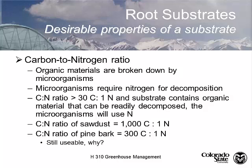If you're using high CN ratio material, you have to add more nitrogen. The best carbon-nitrogen ratio we want is 30 to 1. If it's greater than 30:1, there's organic material that can be readily decomposed, and your microorganisms are going to require nitrogen and rob it from the plant. The CN ratio of sawdust from a sawmill is regularly 1,000 to 1. We use a lot of pine bark in potting soil — pine bark has a CN ratio of 300 to 1, which is 10 times greater than 30:1, yet pine bark is very effective.